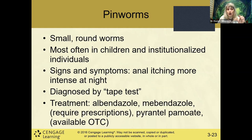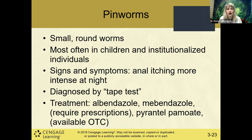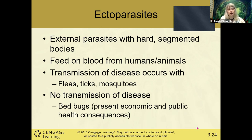Pinworms are small roundworms very often found in children and institutionalized individuals. Patients frequently complain of anal itching. Diagnosis is done with a tape test — the pinworm comes out at night and sticks to the tape. Treatment is albendazole or mebendazole by prescription; pyrantel pamoate is an over-the-counter option.